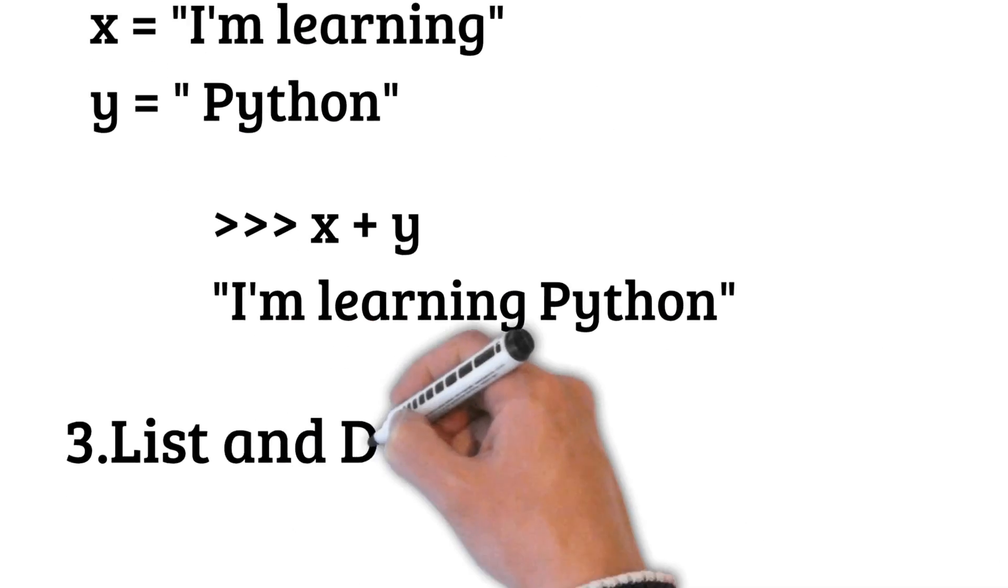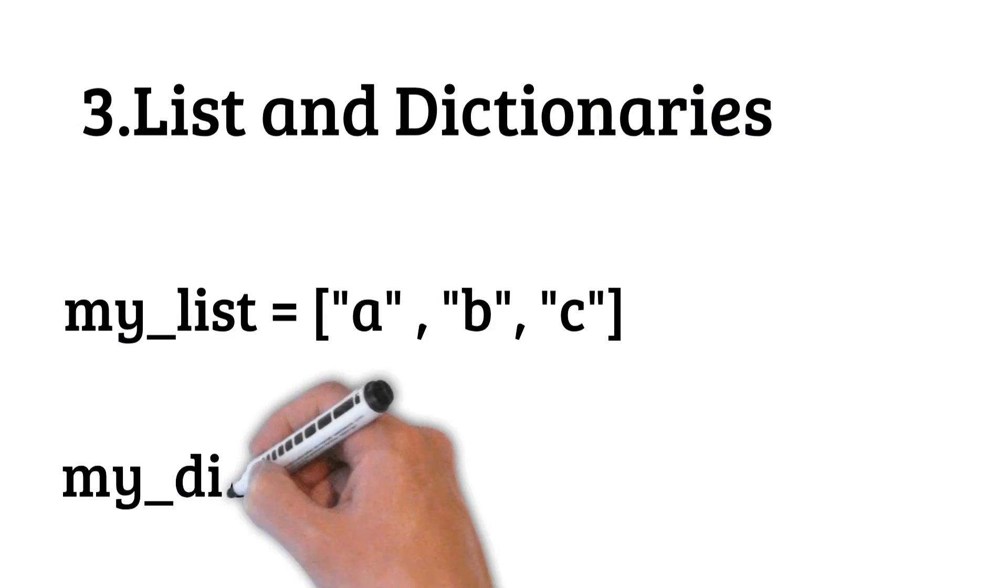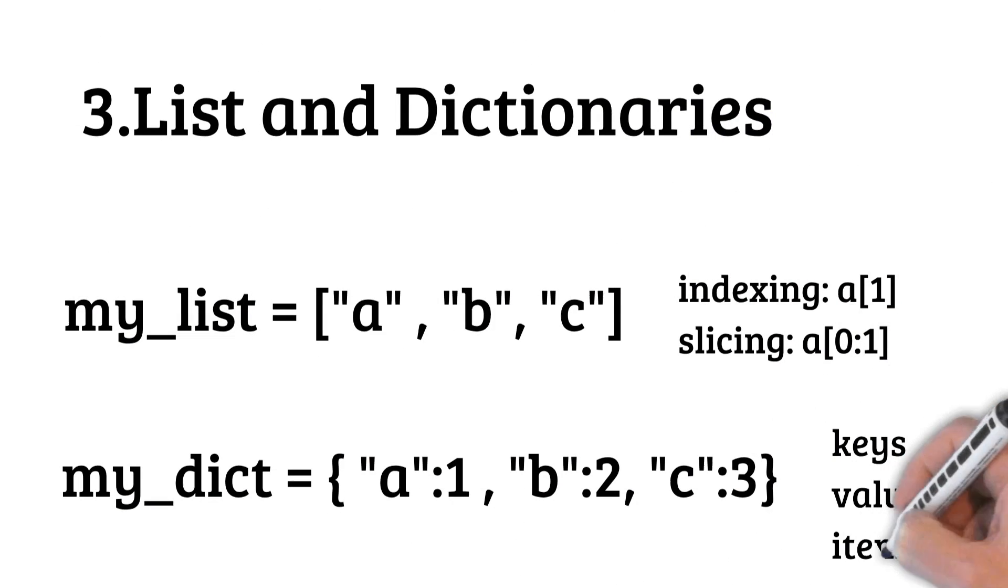Then you have to learn lists and dictionaries. This is widely used in data science because both allow us to store data. With lists, you have to learn things like indexing, slicing, and many methods. The same goes for dictionaries, but they work with keys, values, and items.